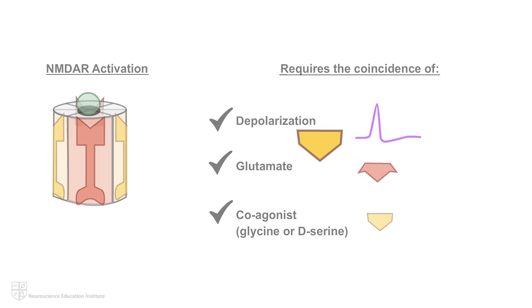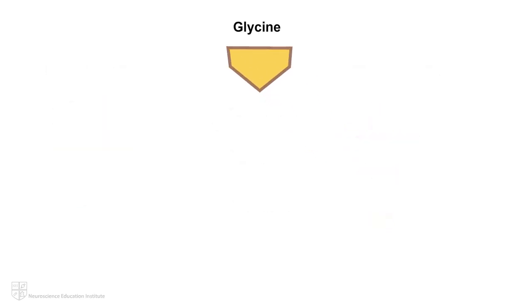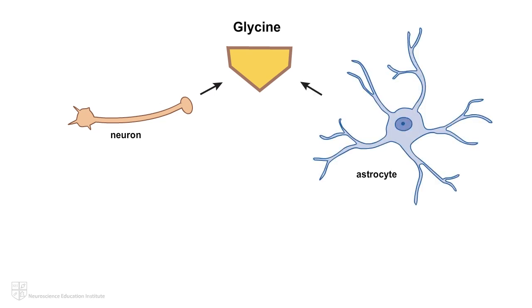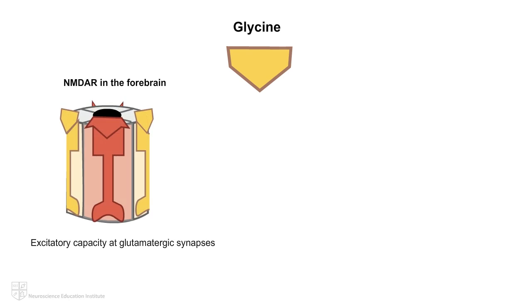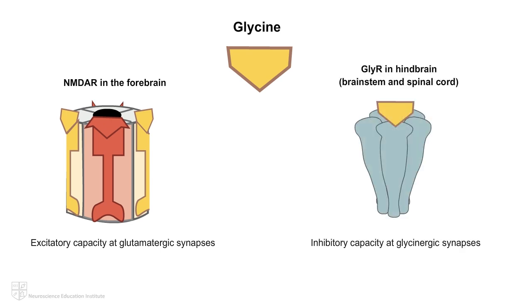Let's take a moment to talk about glycine. Glycine is a neurotransmitter that is released by neurons and by astrocytes, a type of glial cell. In addition to functioning as a coagonist at excitatory NMDAR in the forebrain, glycine may act in an inhibitory capacity when it binds to glycine receptors, GLY-R,